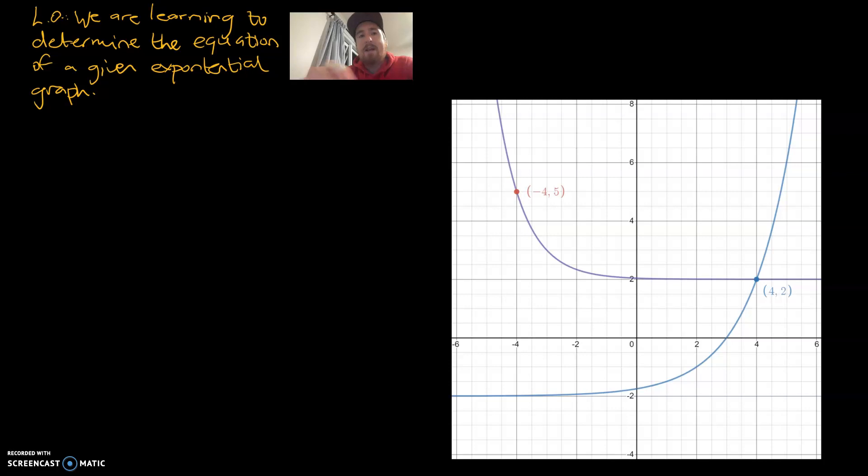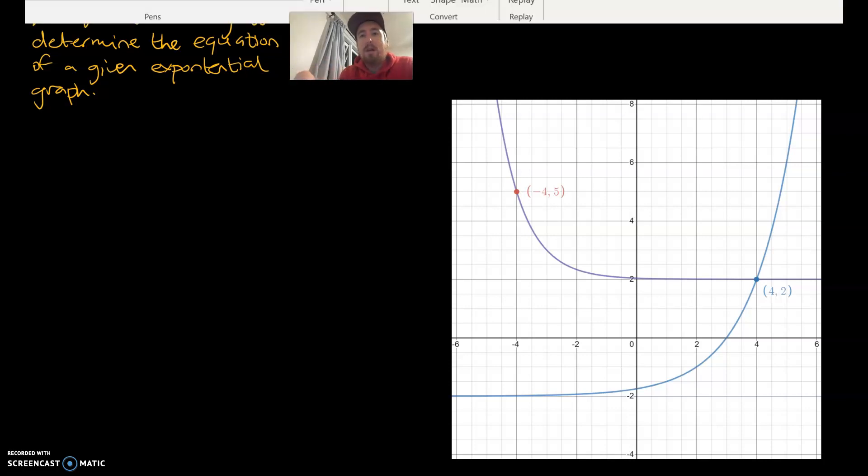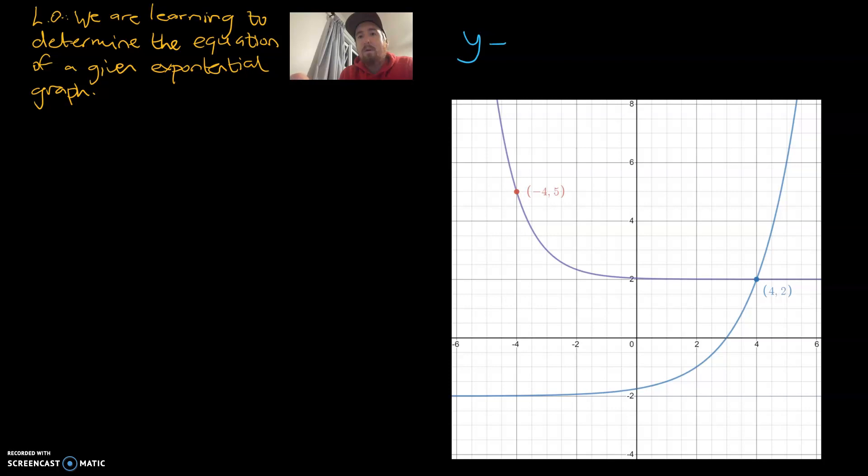And before we get on to that, let's quickly recap what the formula is. So y is equal to a to the power of x plus b plus c. And to recap, the c relates to how much it's moved up or down. The b relates to how much it's moved left or right. And the a, that's kind of the gradient and that affects whether or not it's growth or decay. And it may affect the steepness or shallowness of our exponential curve.